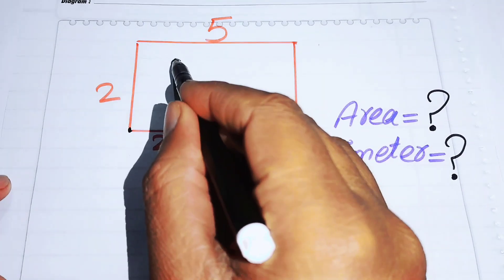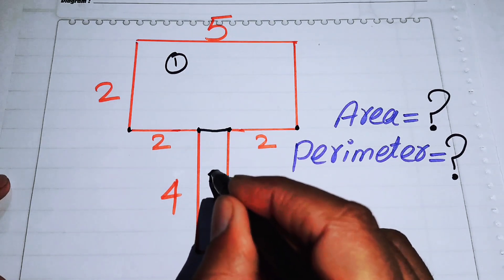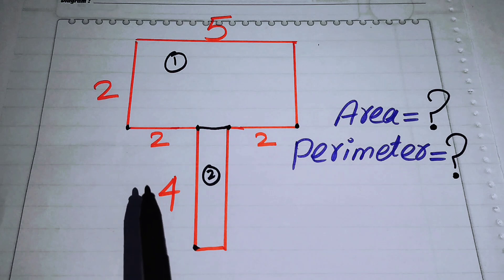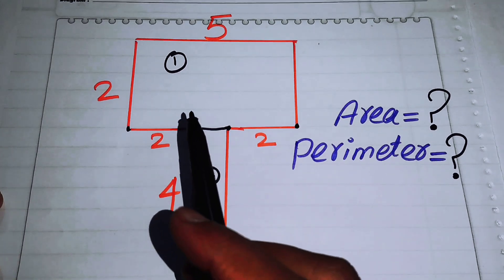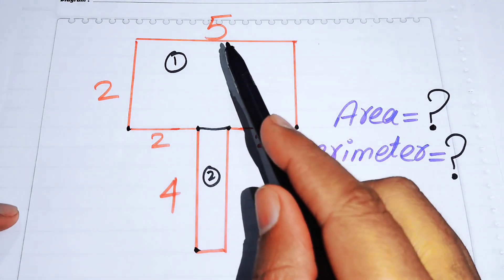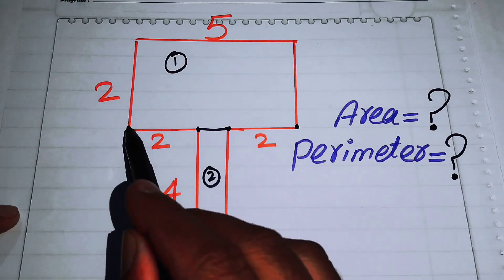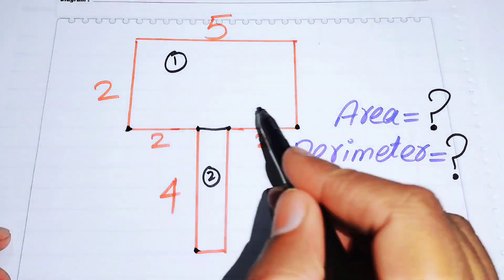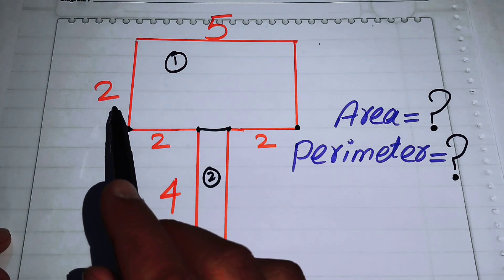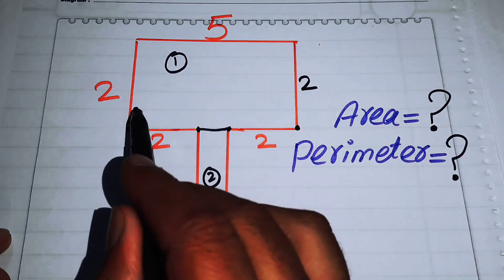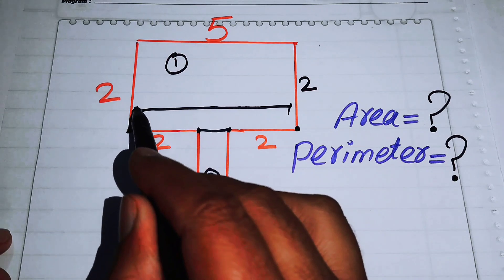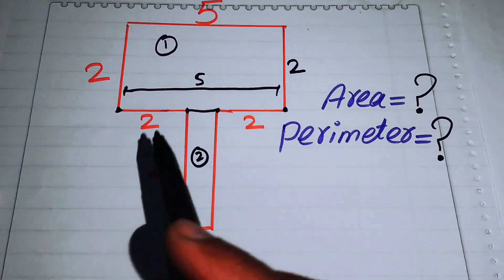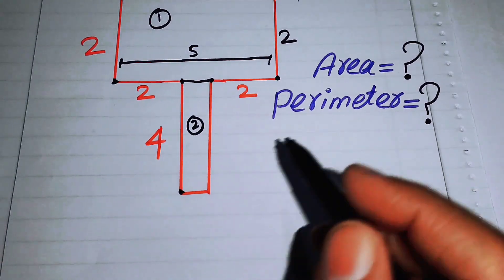We can call these Rectangle 1 and Rectangle 2. For Rectangle 1, one side length is 5, so the opposite side is also 5. The other side is 2, so the opposite side is also 2. We can also confirm this portion is 5.